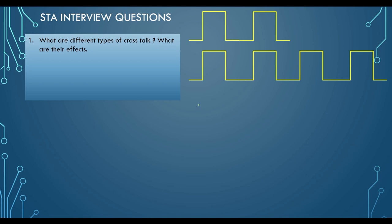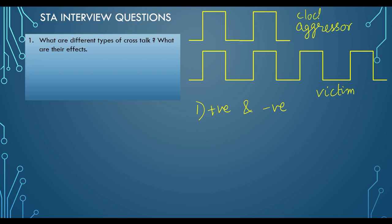There are two different types of crosstalk: positive crosstalk and negative crosstalk. Positive crosstalk means when your aggressor — the net which switches more than the victim — causes crosstalk in the victim. The victim is the one which faces the crosstalk and where you see violations. A typical example is the clock, which is always the aggressor because it keeps switching. The data path generally does not switch as frequently, so the clock is the aggressor and the data is the victim. When they are physically near each other, crosstalk occurs in the victim net.